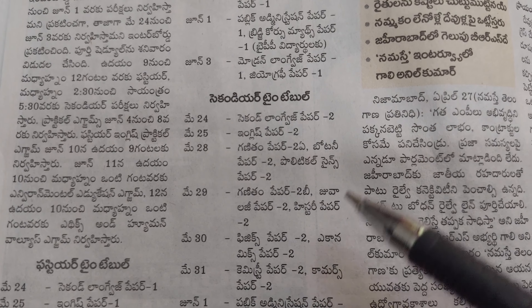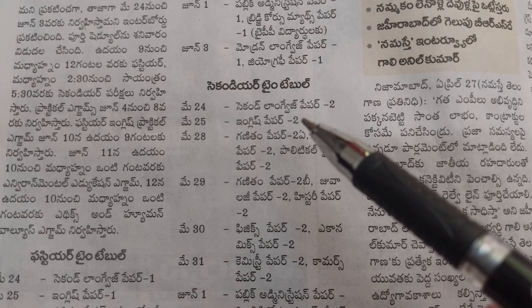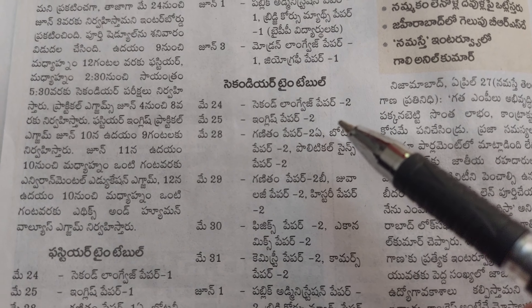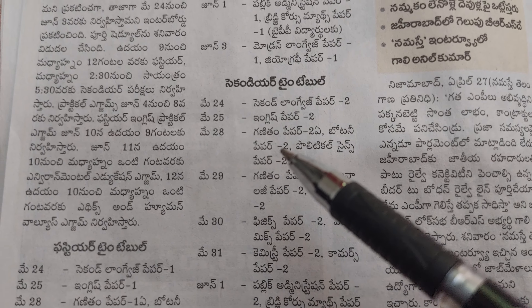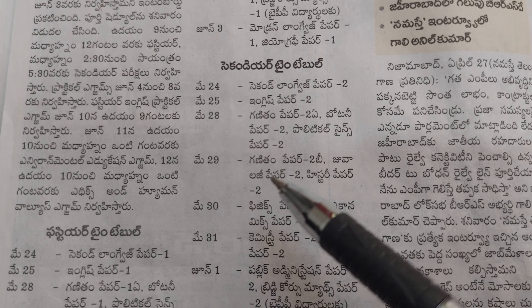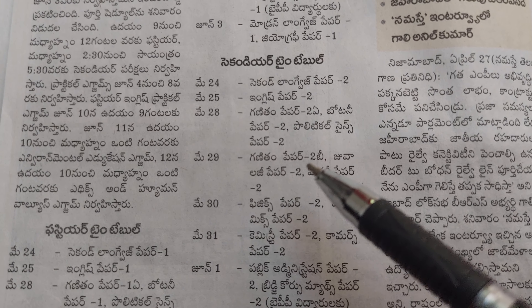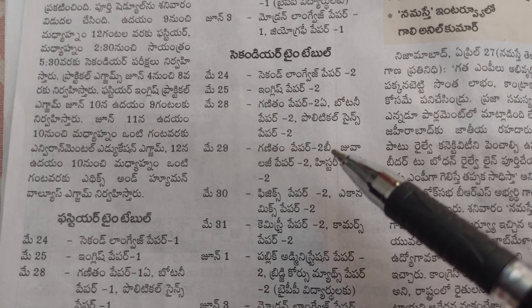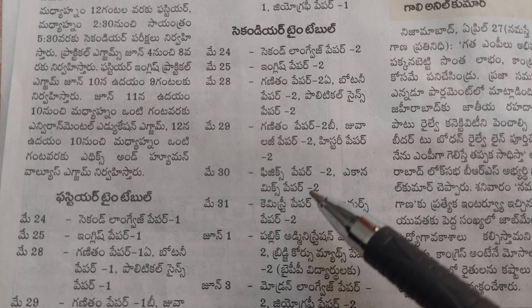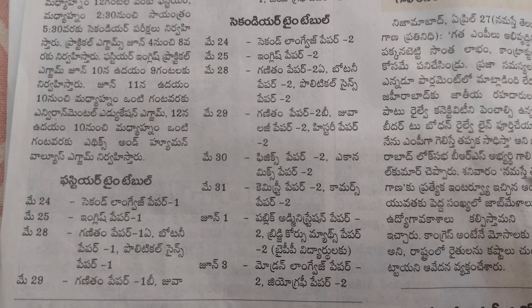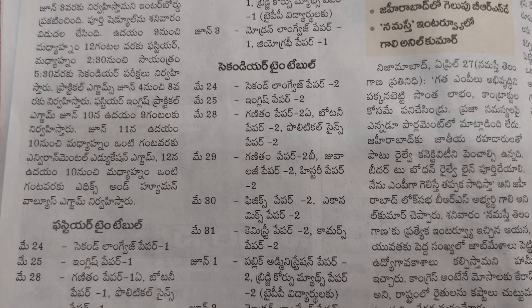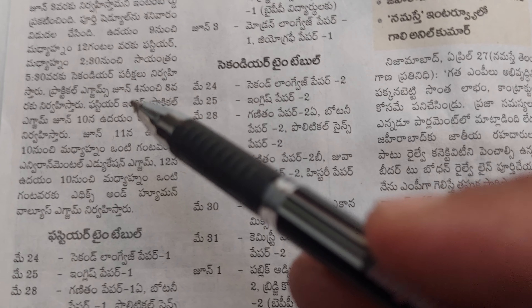Second year timetable — afternoon only, 2:30 to 5:30. May 24 — second language; May 25 — English; May 28 — Mass A (Botany, Political Science); May 29 — Mass A and B (Zoology, History); May 30 — Physics, Economics; May 31 — Chemistry, Commerce.